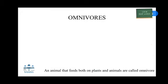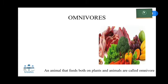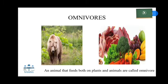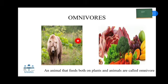Omnivore. The animals that feed both on plants and animals are called omnivores. Some omnivores hunt and eat their food like carnivores. Examples of omnivores are flies, black bear, chicken, rat, etc.